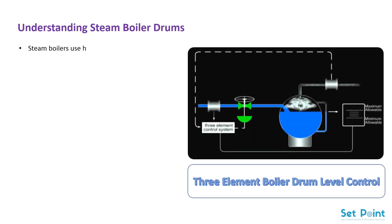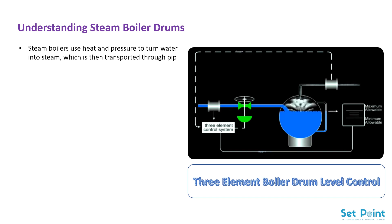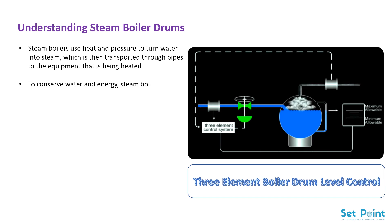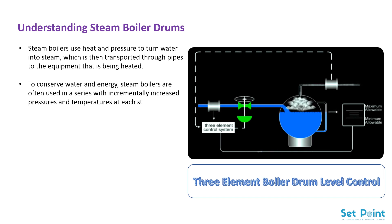Understanding Steam Boiler Drums. Steam boilers use heat and pressure to turn water into steam, which is then transported through pipes to the equipment that is being heated. To conserve water and energy, steam boilers are often used in a series with incrementally increased pressures and temperatures at each stage.